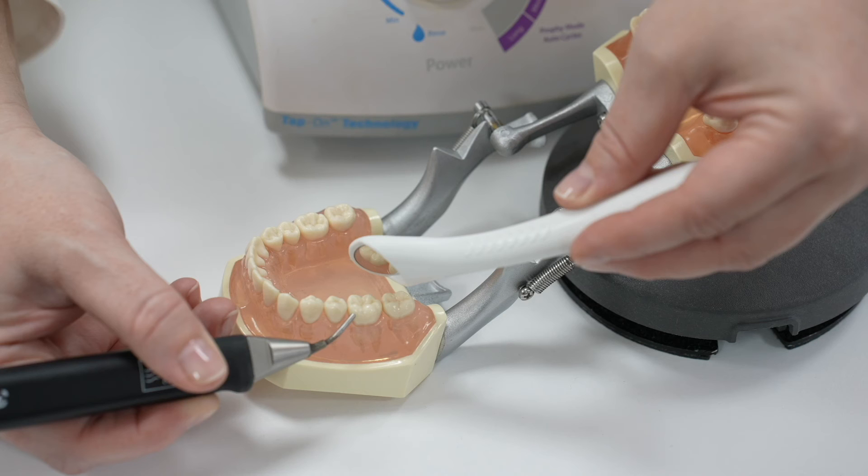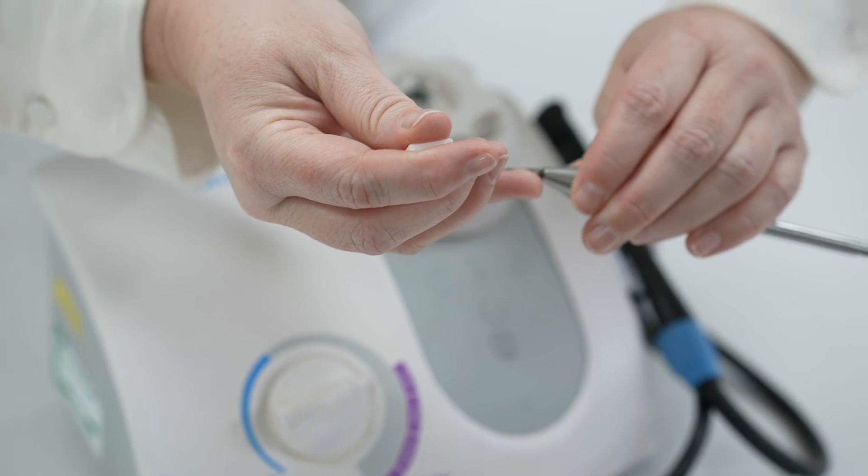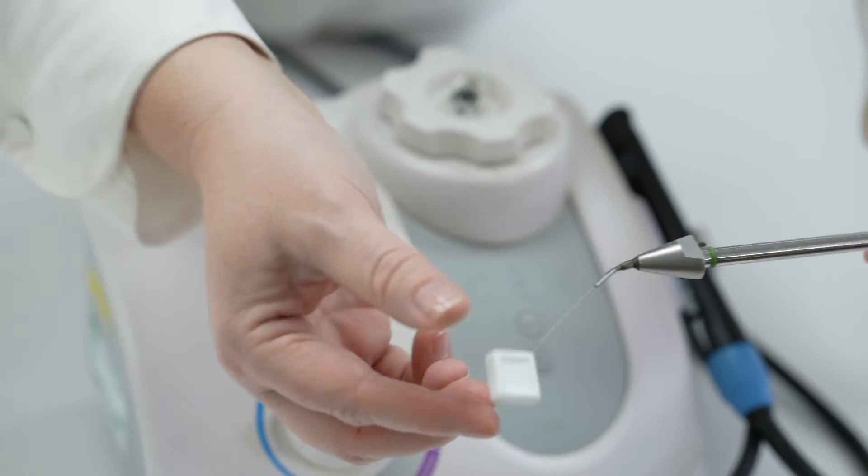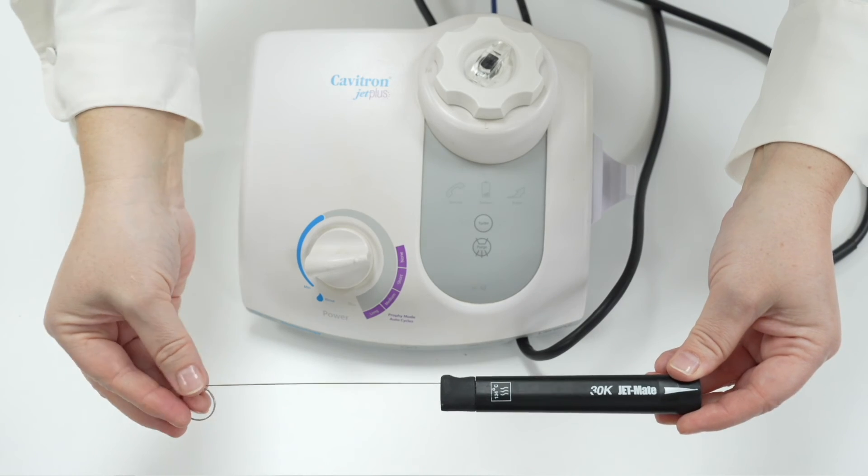So when you have the airline plugged in and the Cavitron is switched on, you should feel air coming through the jetmate and the profi insert. If not, it could be that the air hole has been blocked up in the jetmate.